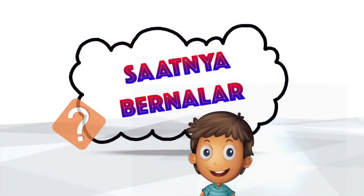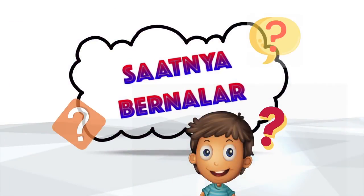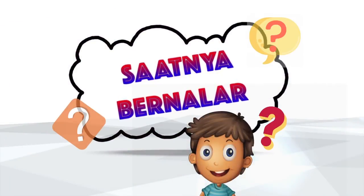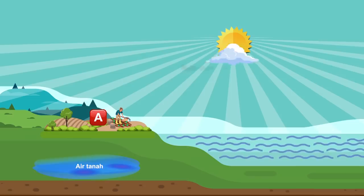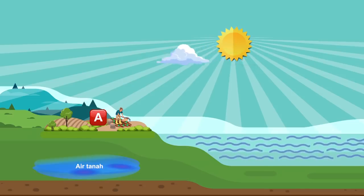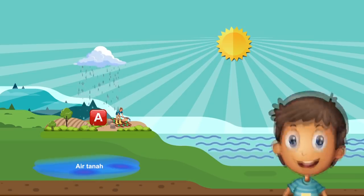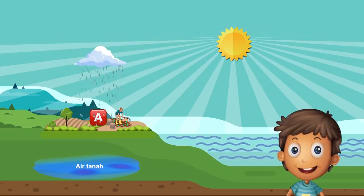Saatnya kita bernalar. Yuk, mari kita bernalar ya. Saatnya Sobat X Science menjawab pertanyaan nalaria berikut. Coba perhatikan proses siklus air ini. Pertanyaan pertama: pada lokasi pertanian A dilakukan proses pemupukan oleh petani. Jika terjadi hujan pada lokasi tersebut, siklus air di bagian manakah yang akan mengalami gangguan?